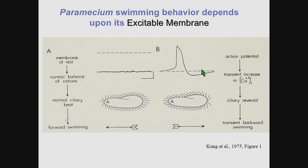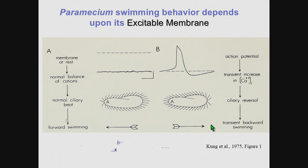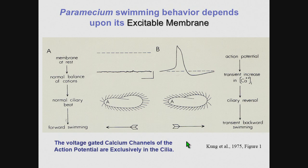When calcium comes into the cilia through those calcium channels, the cilia reverse their power stroke. We're reversing the ciliary power stroke, so the cell swims backward. And while calcium remains high inside the cilia, it will continue to move backward. The important thing to know at this point is that the voltage-gated calcium channels of the action potential are exclusively in the cilia.